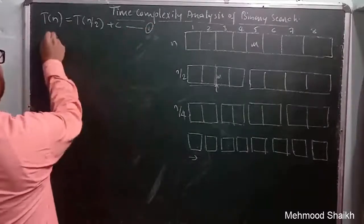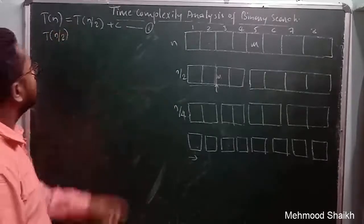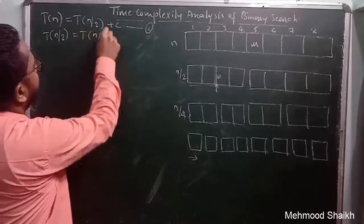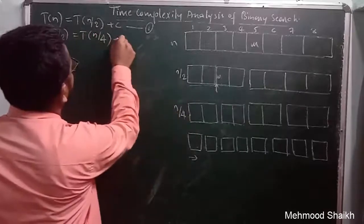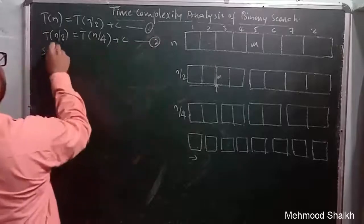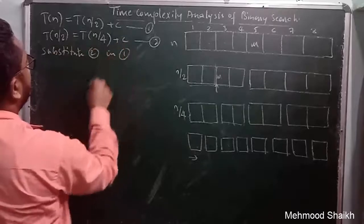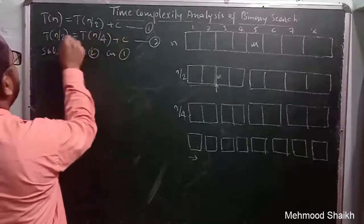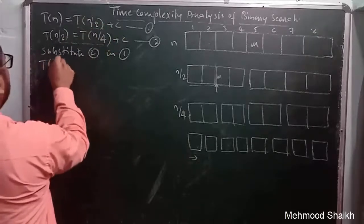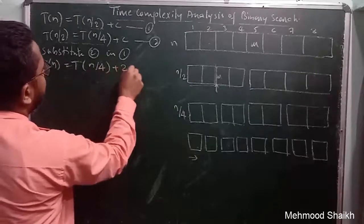We calculate T(n/2) = T(n/4) + c. Substituting this into equation 1, we get T(n) = T(n/4) + 2c, which we mark as equation 3.